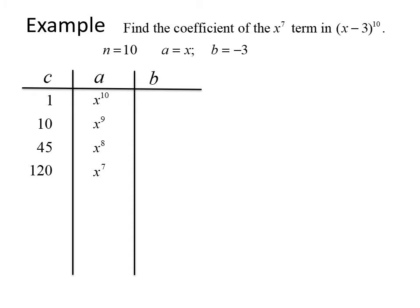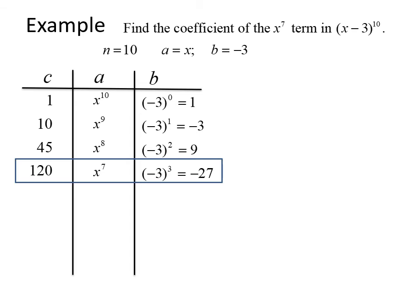We take our b term of negative 3, start with a power of 0, and increase until we match the x to the seventh term. The part of the table with the x to the seventh term gives us 120 times x to the seventh times negative 27. Multiplying that together gives us negative 3,240 x to the seventh power. The problem only asks for the coefficient, so the answer is negative 3,240.